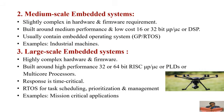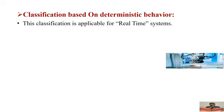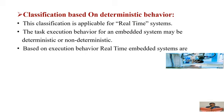The third classification is based on deterministic behavior, which is mostly applicable to real-time systems. Deterministic behavior means you know the output of an embedded system before its execution. The task execution behavior of an embedded system can be either deterministic or non-deterministic, but in most cases embedded systems are deterministic. Based on execution behavior, real-time embedded systems are divided into hard real-time and soft real-time embedded systems.